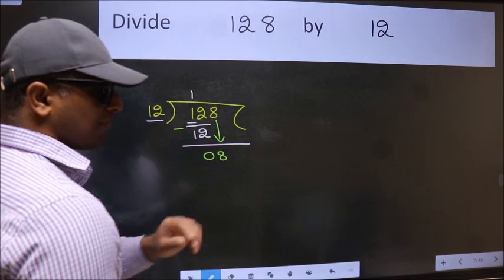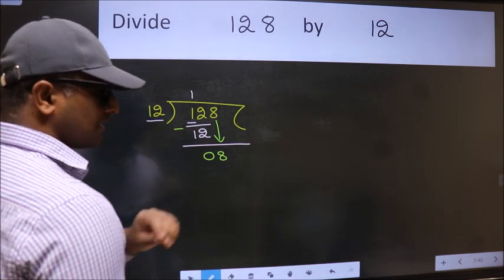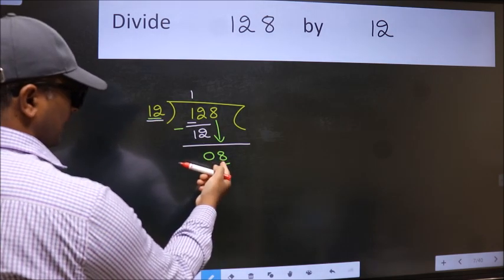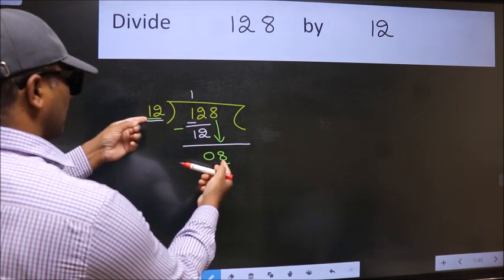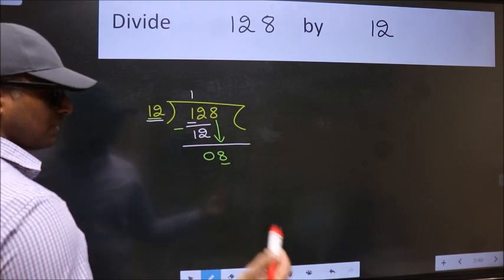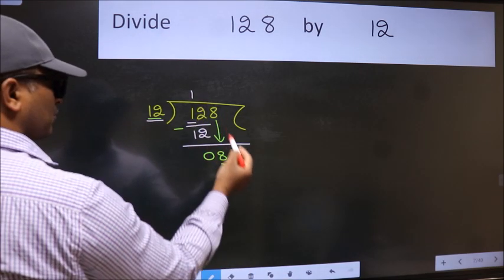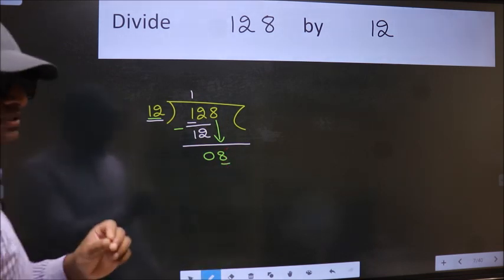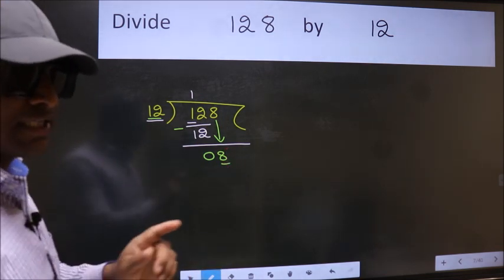the mistake happens. And the mistake is this: Here we have 8 and here 12. 8 is smaller than 12. So what many do is they directly put dot, take 0, which is wrong.